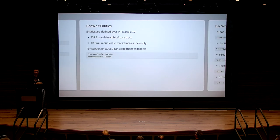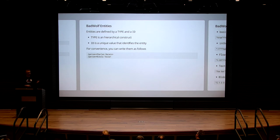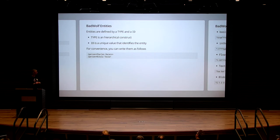Entities are the equivalent of nodes in our graph. We split entities into two components: a 'type' and an 'ID.' Types express ontologies — how we organize things. For example, Charles Darwin is a person, so the first part is 'person,' the second part is the ID that identifies that node. Nikola Tesla is also a person, expressed as 'person:Nikola Tesla.'